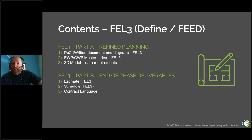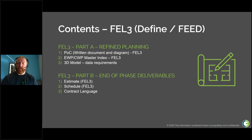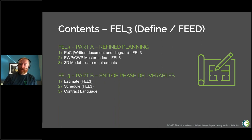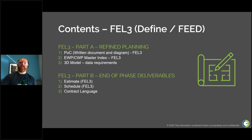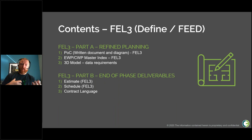During FEL3 the master work package index is updated and 3D model data requirements are considered. A bad model with limited or incorrect data causes significant rework downstream, so it's critical to specify data requirements to the engineering contractor upfront rather than discovering mid-way through detailed design that the model doesn't meet AWP needs. The toolkit will provide data requirements for what's needed to support the model during FEL3.